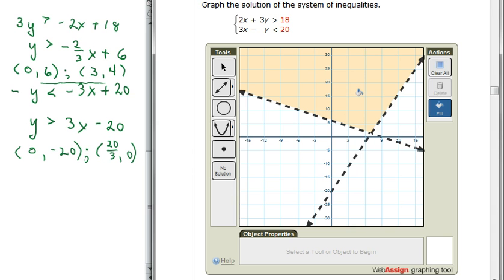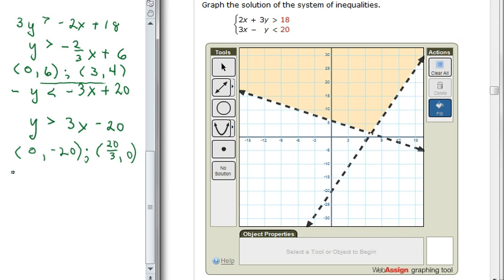We can test that out. Let's try using 0, 10 as a test case. So then 10 would be greater than negative 2 thirds times 0, which is 0, plus 6, and 10 would be greater than 0 minus 20. So the test value does work.